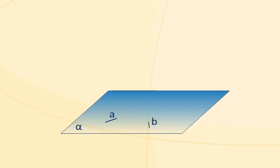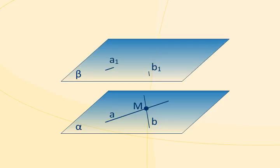Let's draw two intersecting lines, A and B, in the plane alpha. Let's denote the intersection point by M. Let's draw another two intersecting lines, A1 and B1, in the plane beta.